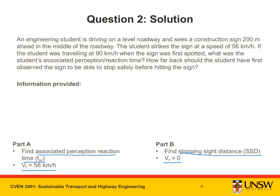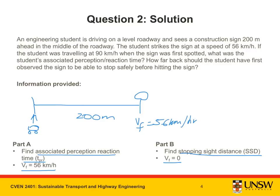In part A, the student is driving along a road and sees the construction sign 200 meters ahead. At the point at which the student hits the construction sign, it is traveling at a velocity of 56 kilometers per hour. However, we want to find at what distance the student should have seen the sign in order to stop by the time it hits the sign. Therefore, we want the final velocity in part B to be zero, and then we want to back-calculate the distance of where the student should have first seen the sign. This is the stopping sight distance.